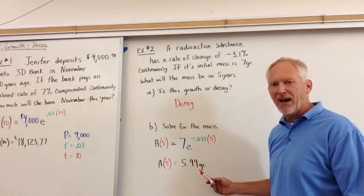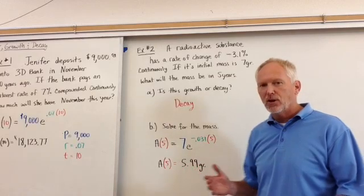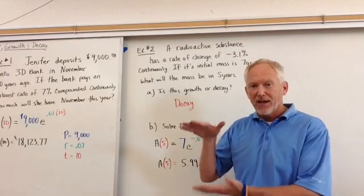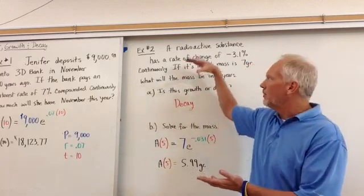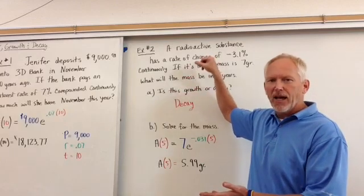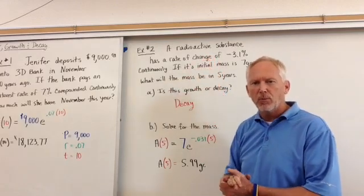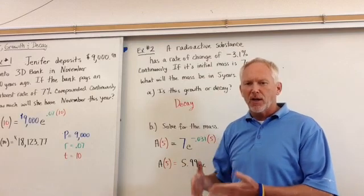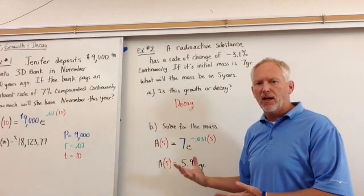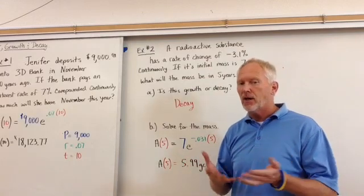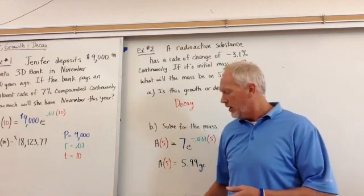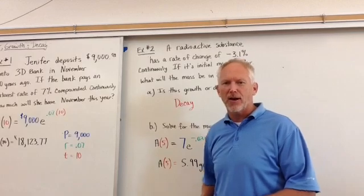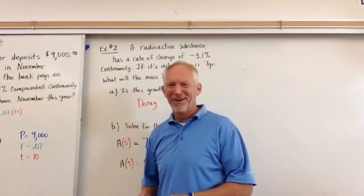5.99 grams, which is good because we should see a decreased amount. The context of the question noted that something was happening at negative 3.1%, so we should have seen a decrease. Look at your values at the end. If you see that your value is growing and it should be decreasing, then something went awry. Hope you enjoyed that. Thanks a lot, have a great night, peace and love.